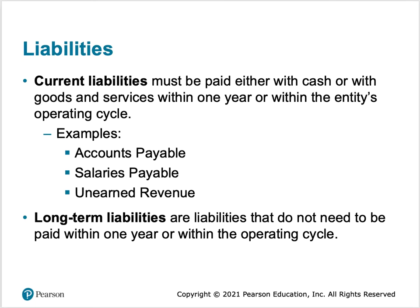For example, with a 30-year mortgage, years two through 29 would be listed as long-term and year one would be listed as current.